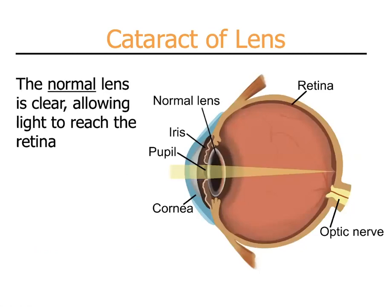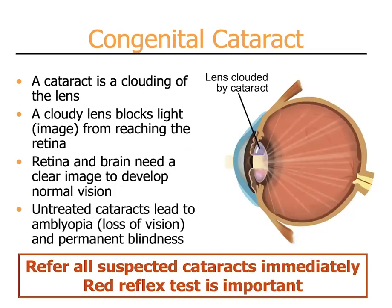The normal lens of the eye is crystal clear and allows light to reach the retina, forming a picture that is then transmitted to the brain. A cataract is when that lens becomes cloudy. Clouding of the lens blocks light or the image from reaching the retina. In children, especially young children, the retina and brain need a clear image to develop normal vision. Cataracts can lead to permanent loss of vision and therefore should be referred immediately. This highlights again the importance of the red reflex test.